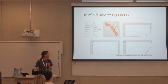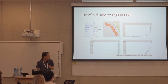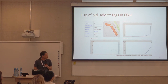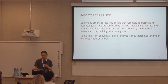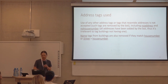There is an example of a recently changed address in Riga. You can see the previous street name. And looking at the old address tags and the history of their usage, you can see high spikes — this is data from Latvia, showing a lot of usage from all the tags used for Latvia. The use of any other address tags or tags that resemble addresses is not accepted, and such tags are removed by the bot.